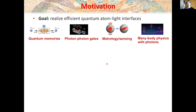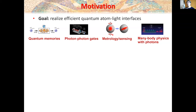For example, things like quantum memories for light, photon-photon gates, where if two photons collide they can effectively interact and impart a phase shift to each other. These types of interactions can also be used to generate meteorologically useful states like spin squeezed states. In this case, you can map collective spin properties of the atoms onto light, and by measuring the light, you can project down the noise of the collective atomic spin in some quadrature. And there's also the possibility for rich many-body physics, realizing many-body quantum states of light.